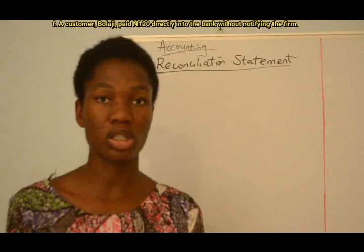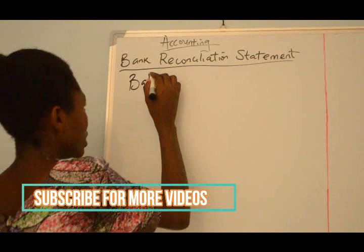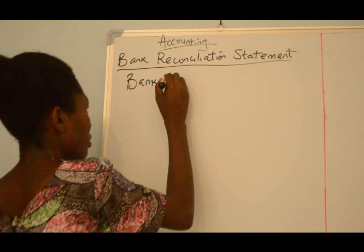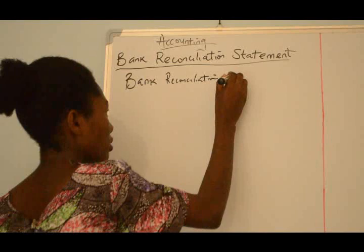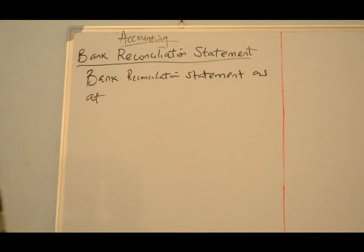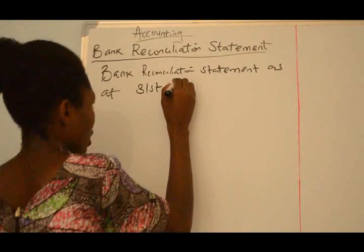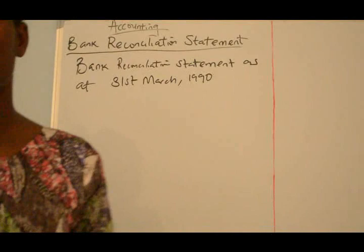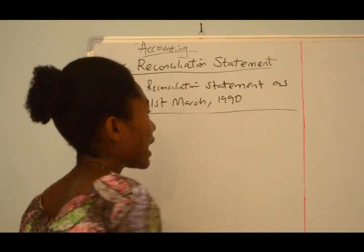D — a dividend of 300 was paid directly into the bank and not recorded in the cashbook. E — checks for 1,000 naira were entered into the cashbook and paid to the bank but had not yet been cleared and thus not credited. F — a customer paid 120 naira directly into the bank account without notifying the firm. We'll be preparing our Bank Reconciliation Statement with this given information, starting with Balance As Per Cashbook.